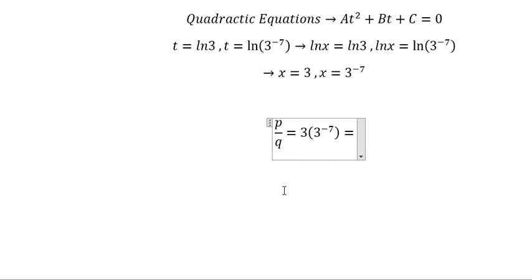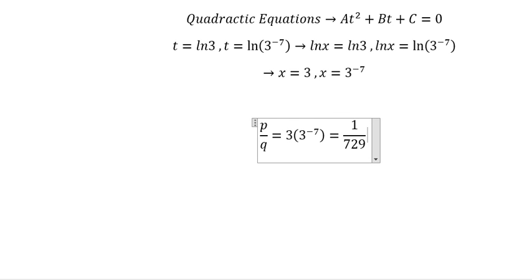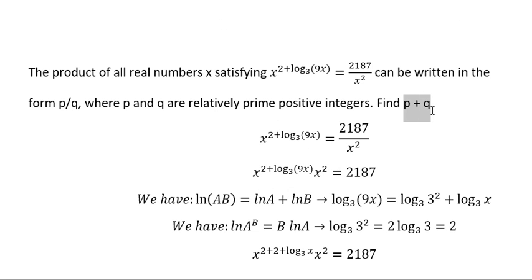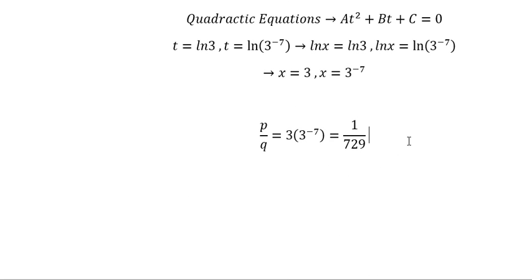If we calculate this, we have 1 over 729. On the question we want to find p + q, so that should be 1 + 729, which equals 730. And that is the final answer.